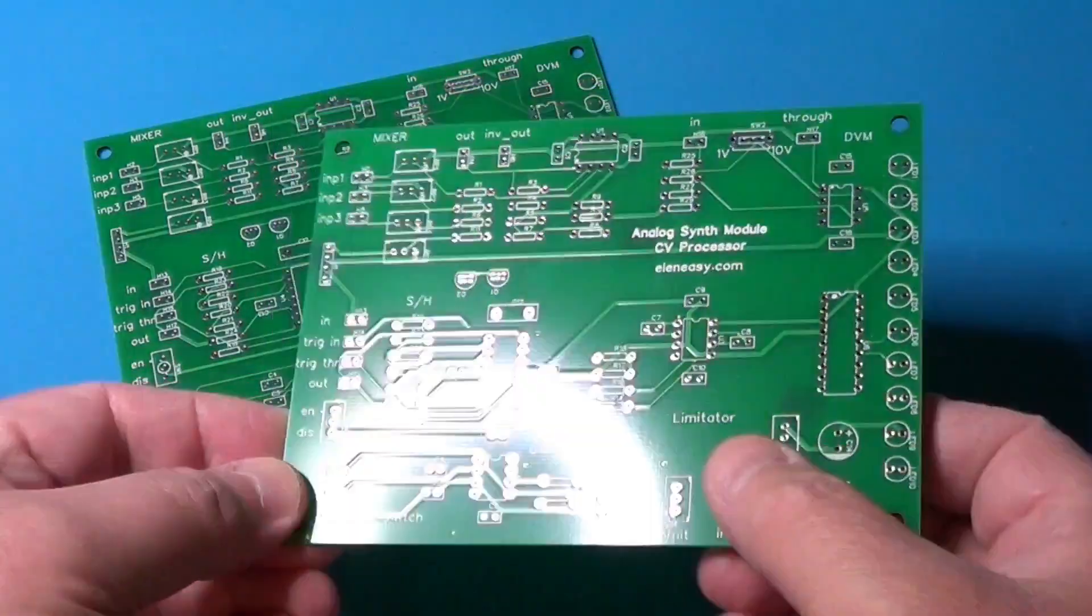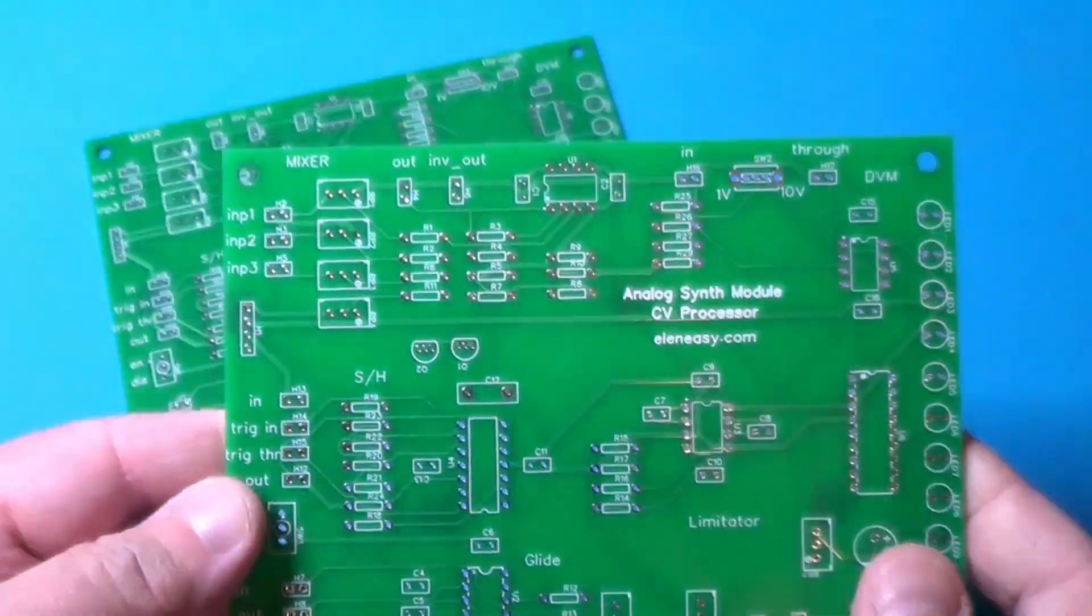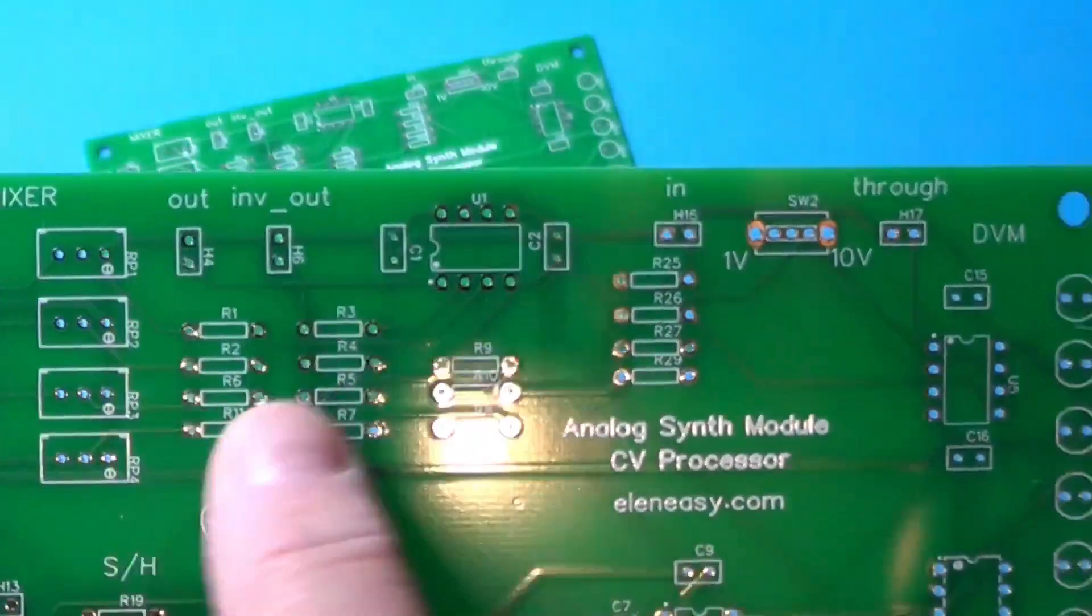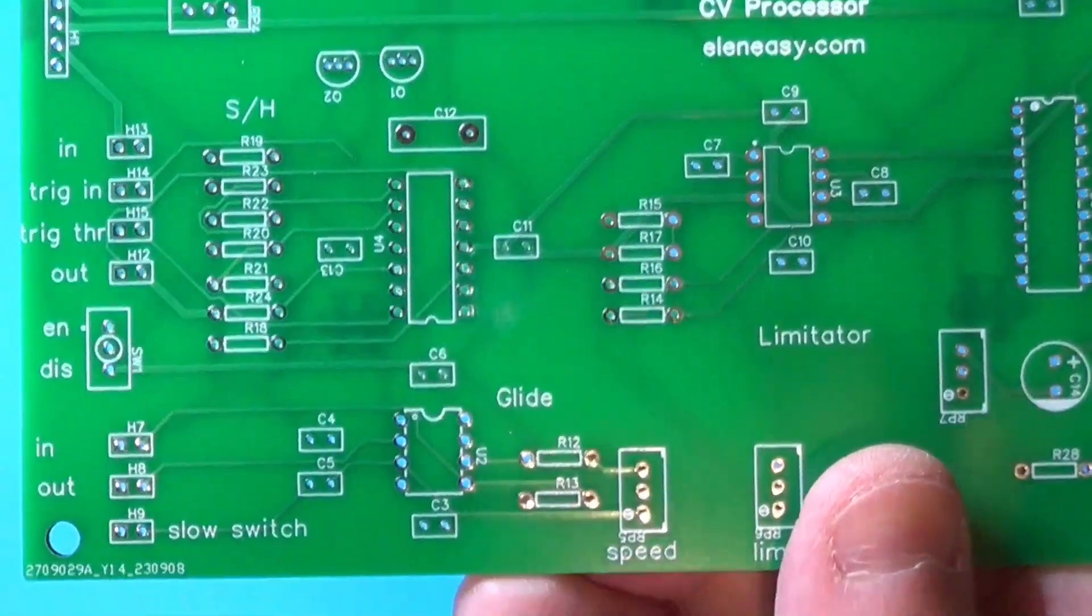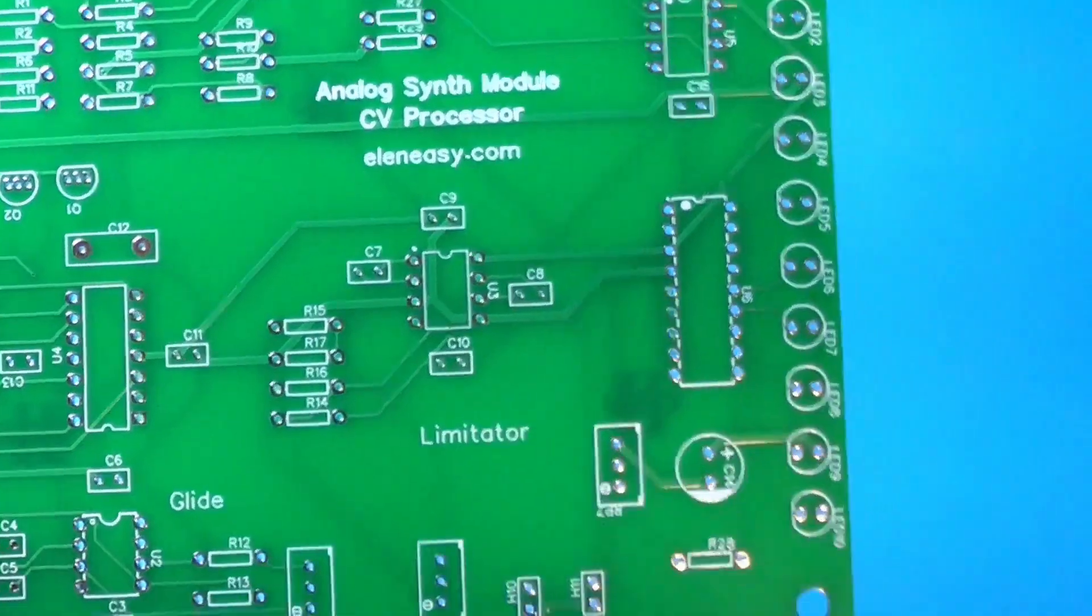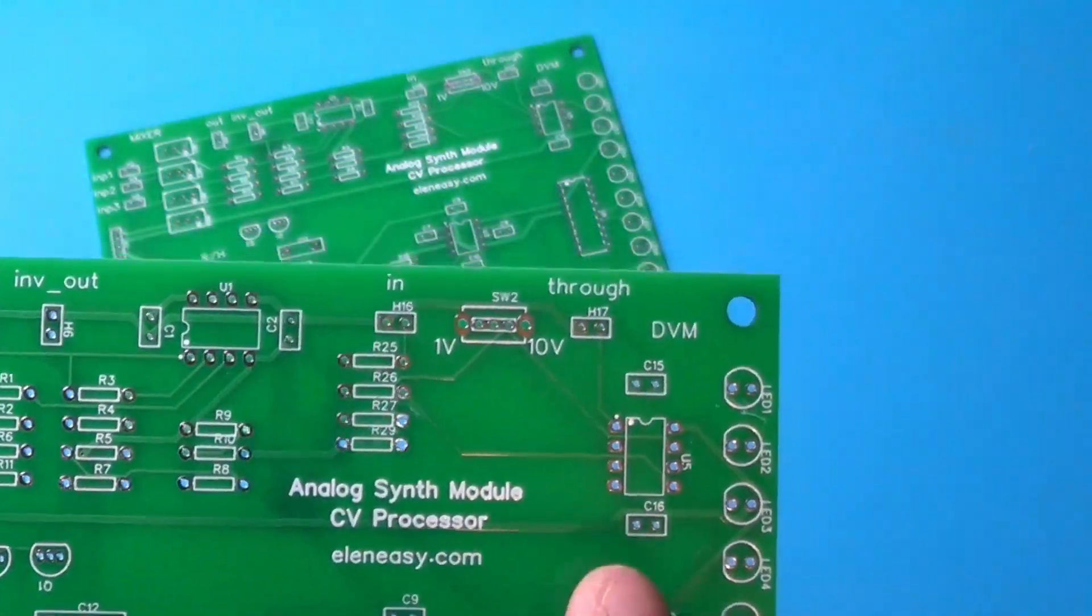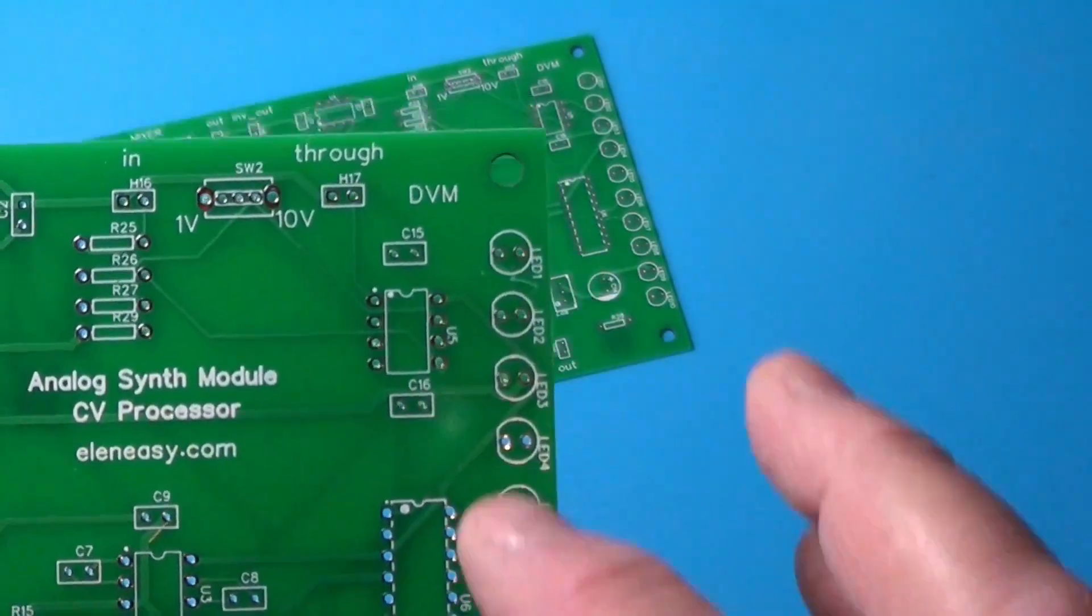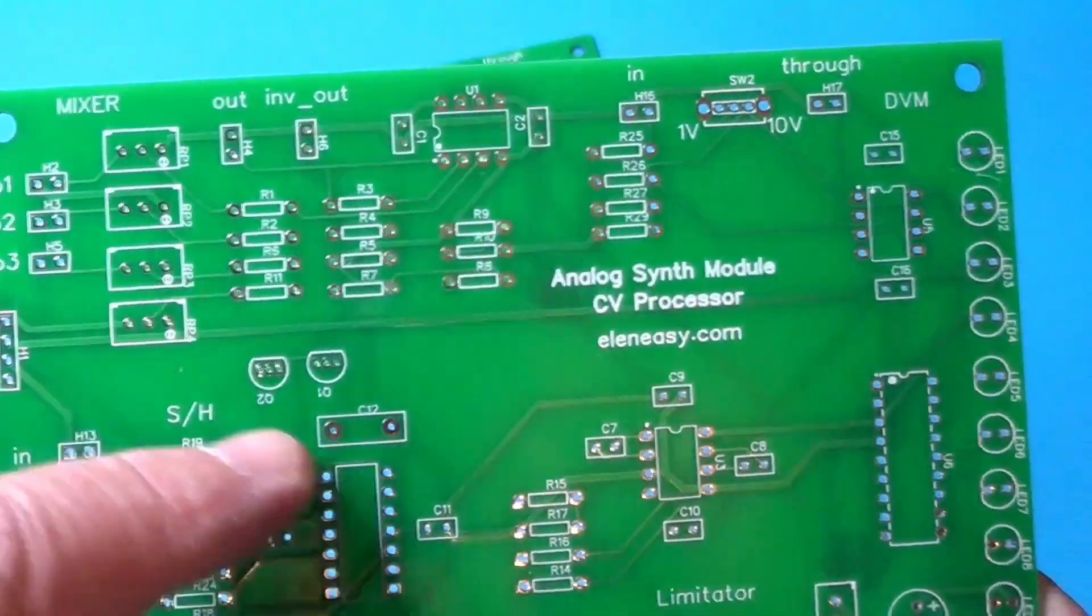These are the two PCBs where the two CV processors will be mounted. This one is the area where the mixer components will be assembled. This one on the bottom will be the part where the glide is built. This area is the limitator circuit, and this one is the voltmeter, which will be assembled only on one of the two PCBs. This area is the one for the sample and hold circuitry.